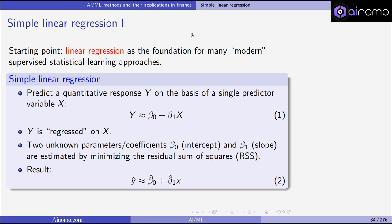We say that y is regressed on x. We have two unknown parameters, or coefficients: β₀, which is called the intercept, and β₁, which is called the slope. These are the intercept and slope of the linear regression function — it's a line — and they are estimated by minimizing the residual sum of squares, or RSS. What we get as a result are estimates β₀-hat and β₁-hat, and if we now have input data x we can use those estimated parameters to enter x and get an estimate for y, y-hat.